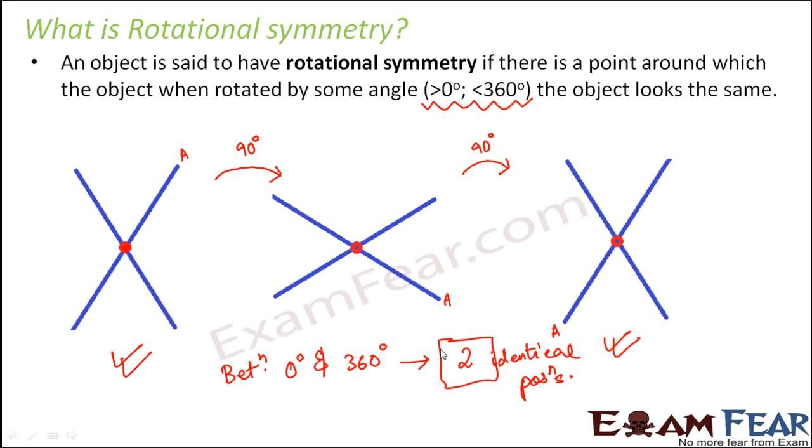This is one such example of an object with rotational symmetry. I hope this concept is getting clear to you. An object has rotational symmetry when, after rotating by some angle less than 360 degrees, it possesses identical positions.